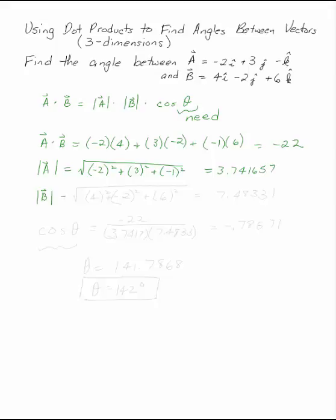Magnitude of B, same thing. Pythagorean theorem, 4 squared minus 2 squared and 6 squared. That gives you 7.48331.